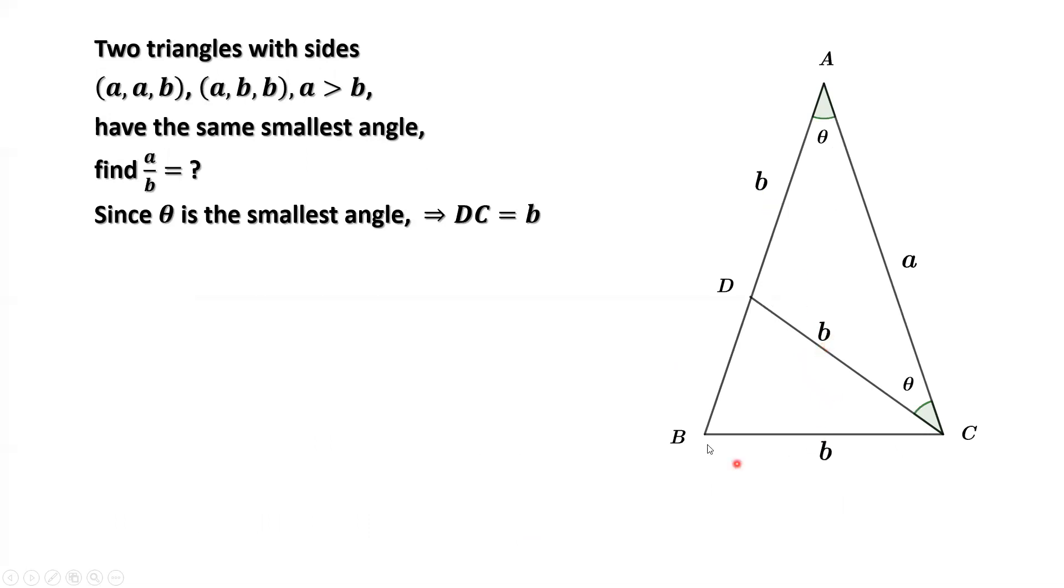Because this side is b and this side is b, look at this triangle BCD. Both sides, DC and BC, are the same, so this triangle is an isosceles triangle. The big one we know is an isosceles triangle. So here we have two isosceles triangles: triangle ABC and triangle BCD.